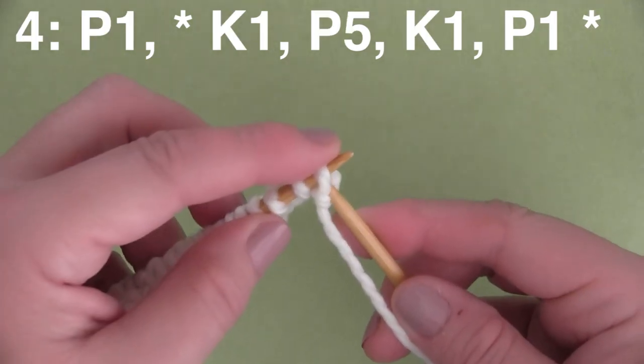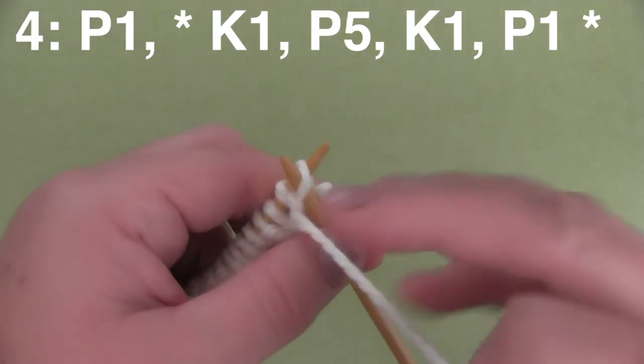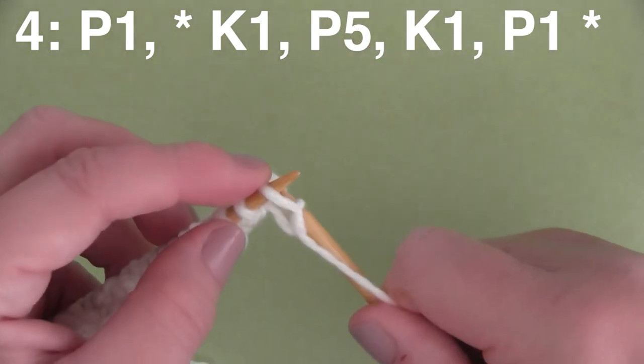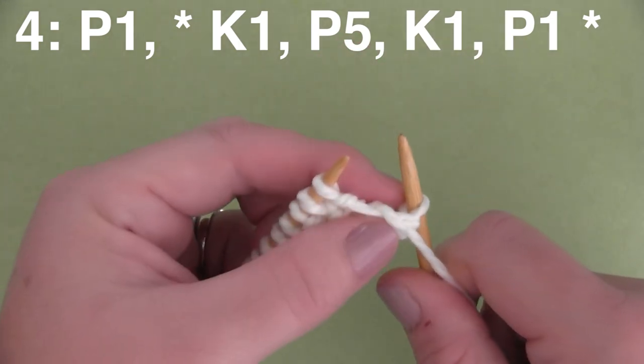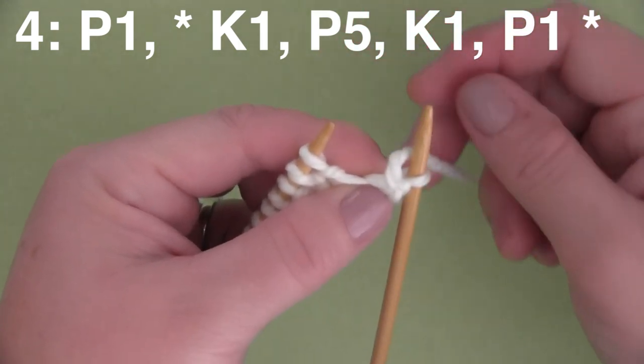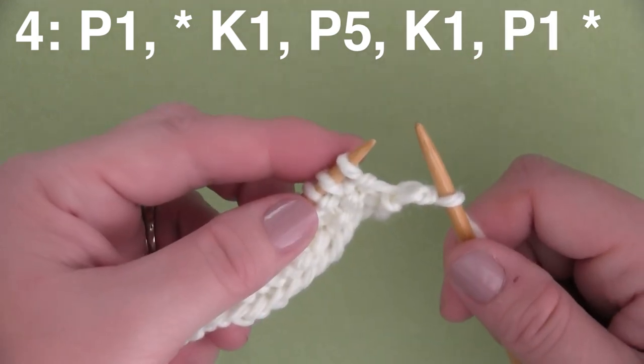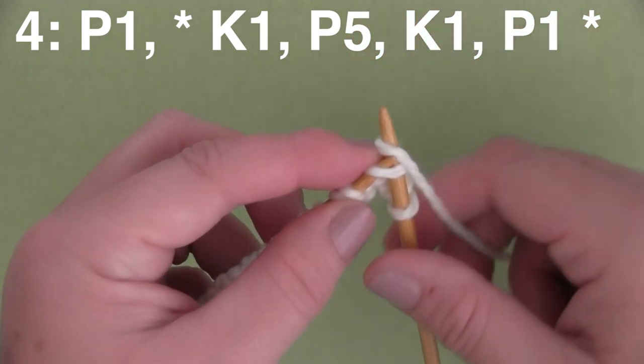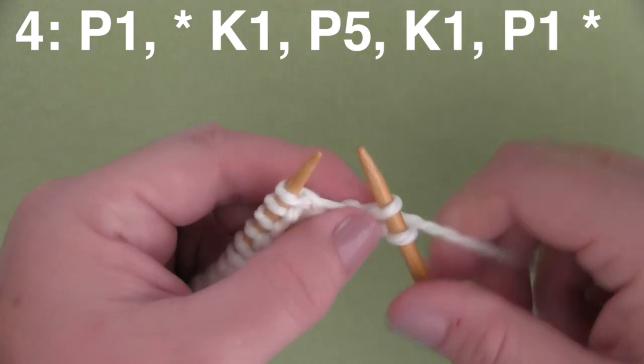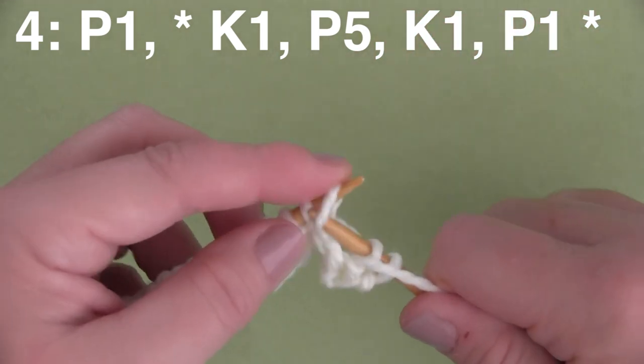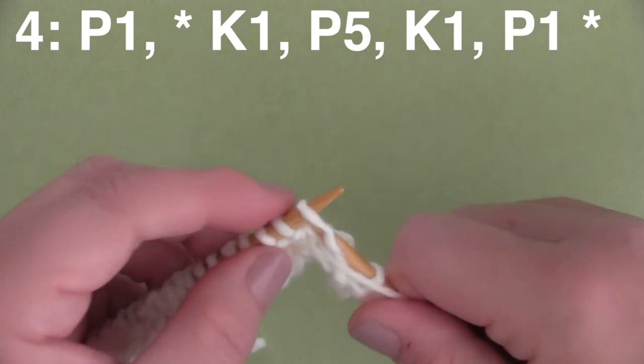Row 4, we begin with a purl stitch. So you'll have your yarn in the front to begin. And then the entire rest of your row is the repeat. So it's K1, that's knit 1, bringing our yarn around to the front. And we're going to purl 5 stitches.